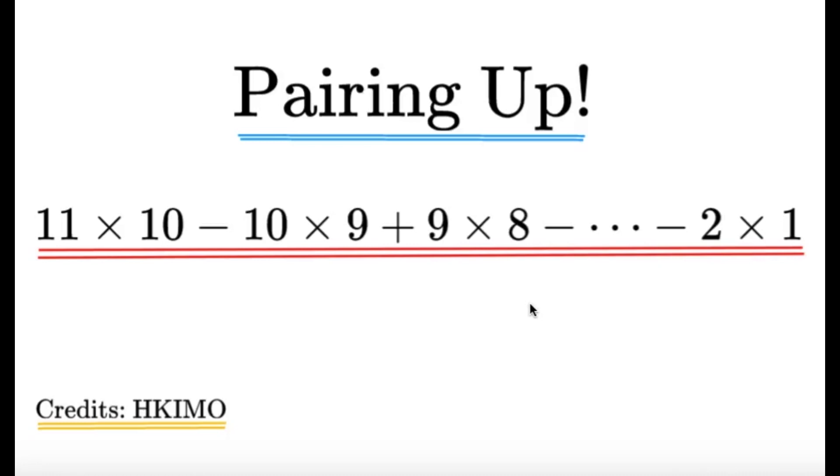Hello, hello, it's Dumplet here. Here's an item on arithmetic. Find the value of 11 times 10 minus 10 times 9 plus 9 times 8 minus so on and so on following the pattern until minus 2 times 1.